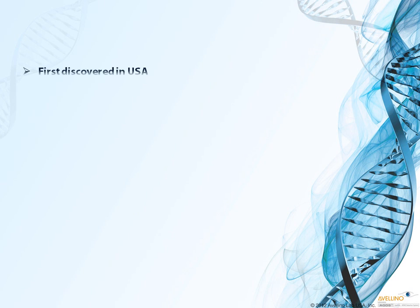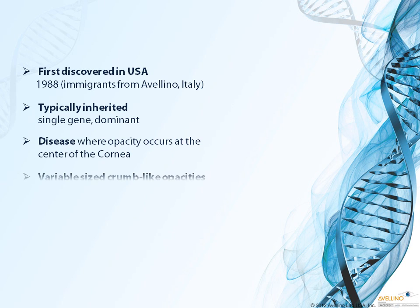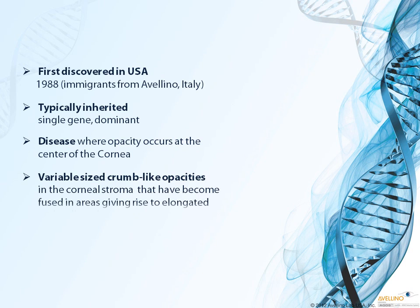First discovered in the United States in 1988 among immigrants from Avelino, Italy. Typically inherited as a single gene dominant disease, opacity occurs at the center of the cornea. Variable size crumb-like opacities in the corneal stroma become fused in areas, giving rise to elongated and stellate shapes.